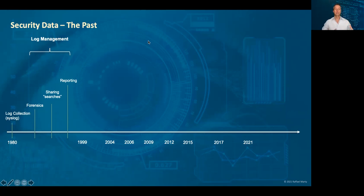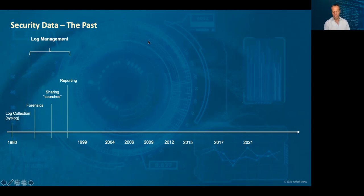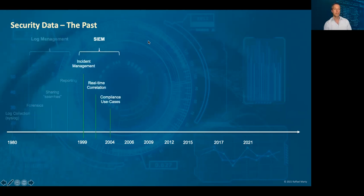We then got into some use cases of forensics with all this data, looking at what happened to a system — not necessarily security-focused in the beginning, but really application-focused. Then people started sharing grep patterns, looking for different things in this data, and we slowly started getting into reporting use cases. Especially in the web space, when you do web analytics — that was kind of the first larger reporting use case — and only then did we start really getting into security use cases.